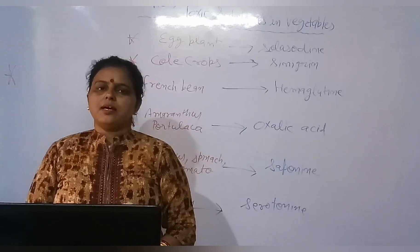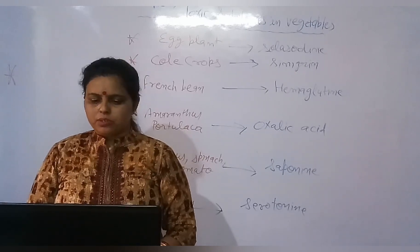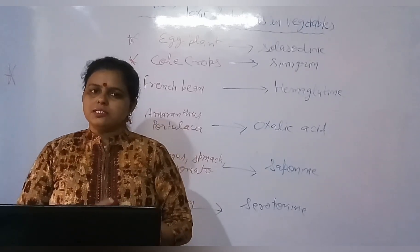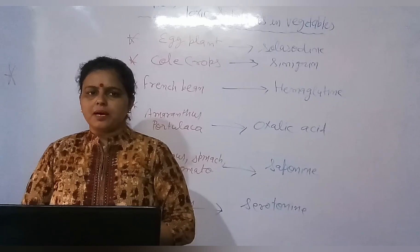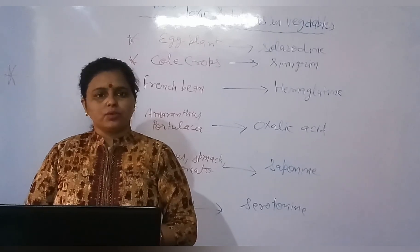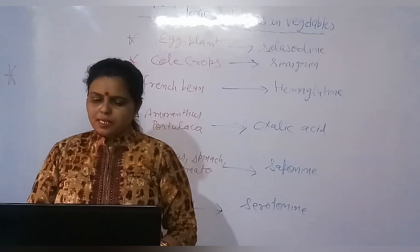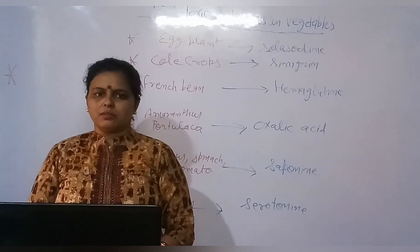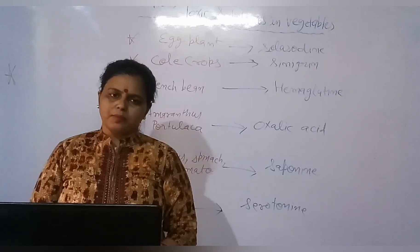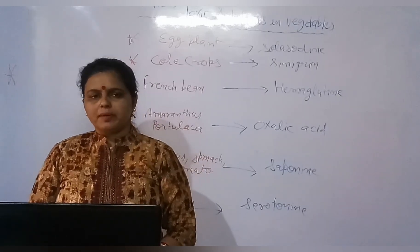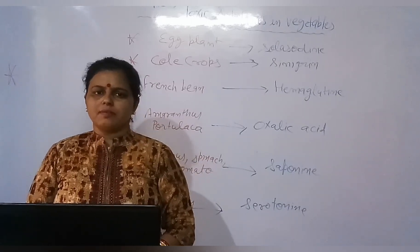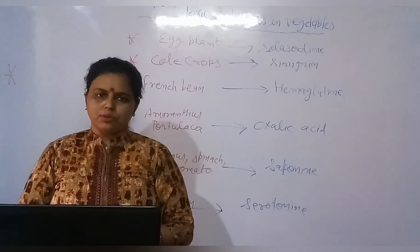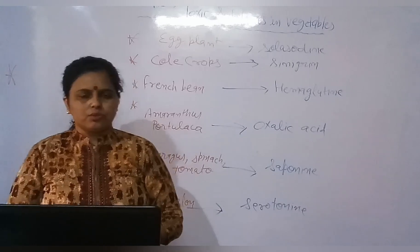Vegetables associated with toxic substances include asparagus, spinach, and tomato. Other toxic substances found in vegetables include saponin, found in watermelon, and serotonin.